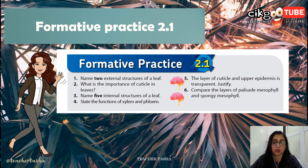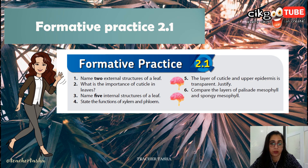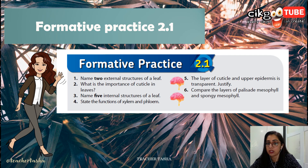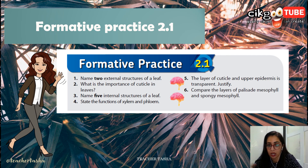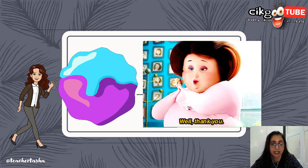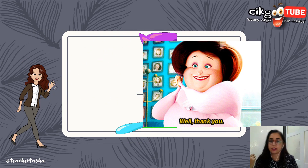We are done. Go and do Formative Practice 2.1 — there are six questions. They include: naming two external structures of a leaf, the importance of the cuticle, naming five internal structures, stating the functions of xylem and phloem, justifying why the cuticle and upper epidermis are transparent, and comparing the arrangement of palisade mesophyll and spongy mesophyll. That's it — thank you for watching, and please like and subscribe. Bye!